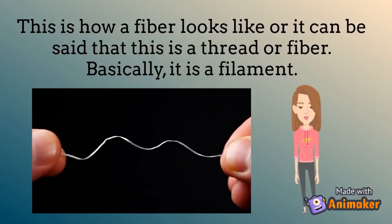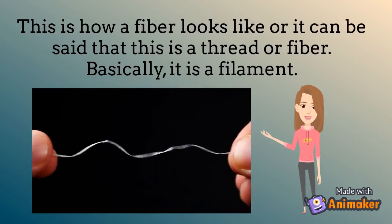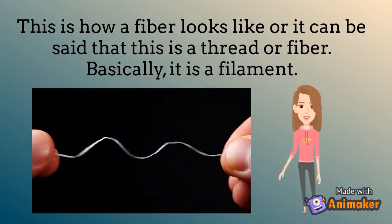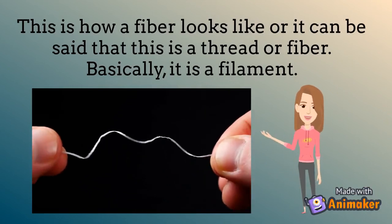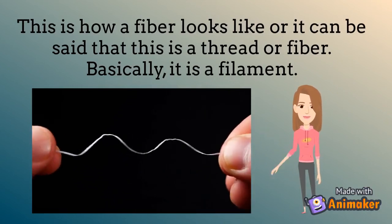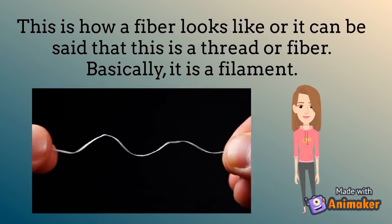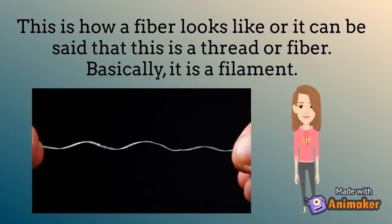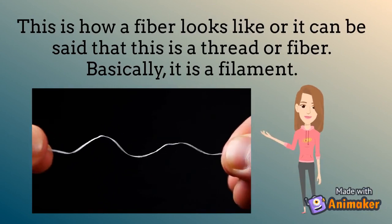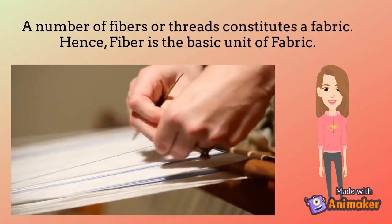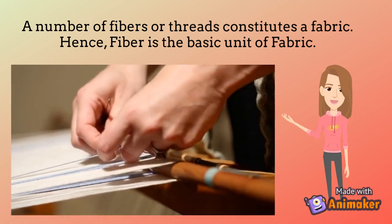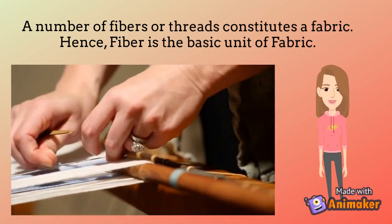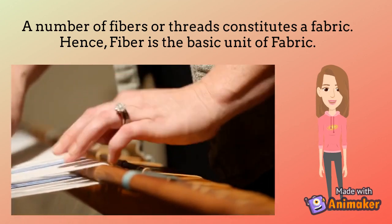This is how fiber looks like, or it can be said that this is a thread or fiber. Basically it is a filament. Fiber is the basic unit of fabric because a number of fibers constitute it.